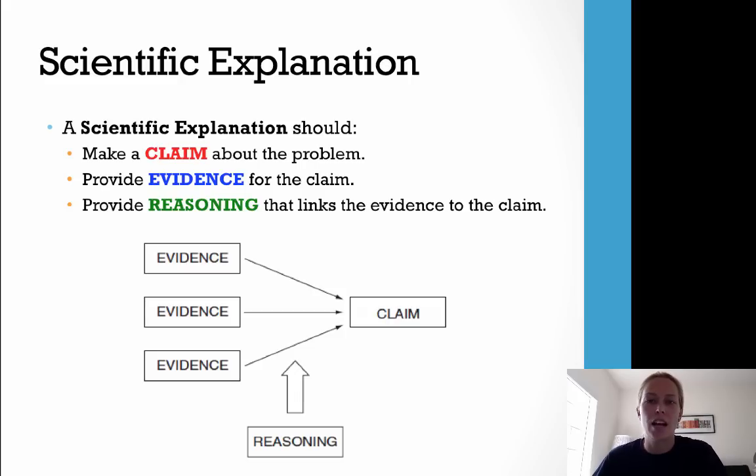A scientific explanation has three components: a claim, evidence, and reasoning. A scientific explanation should make a claim about a problem or question, provide evidence for the claim, and provide reasoning that links the evidence to the claim.